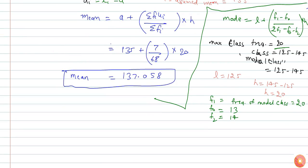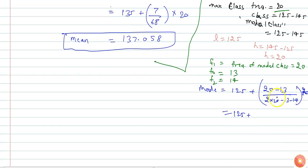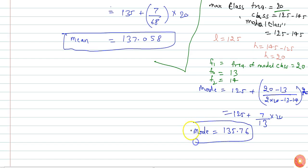Putting all values into the formula: mode equals 125 plus (20 minus 13) divided by (2 times 20 minus 13 minus 14), into 20. This simplifies to 125 plus 7 divided by 13, into 20, giving mode of the given data equal to 135.76.